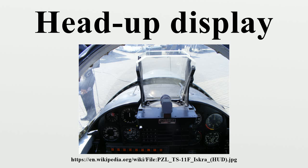This setup produces an image where the light is collimated, i.e., the focal point is perceived to be at infinity. The combiner is typically an angled flat piece of glass located directly in front of the viewer, that redirects the projected image from the projector in such a way as to see the field of view and the projected infinity image at the same time. Combiners may have special coatings that reflect the monochromatic light projected onto it from the projector unit while allowing all other wavelengths of light to pass through.